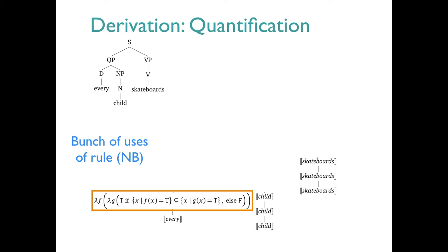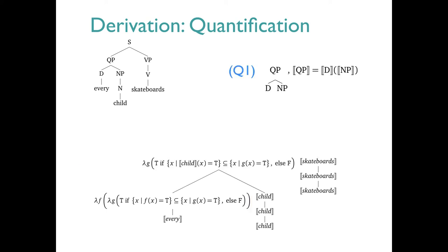We first put together the determiner every with its restriction child. That's an application of Q1. Intuitively, what happens is that the meaning of child knocks out the lambda F in every, and goes in for F in the body of that expression, which delivers the entire meaning of the subject every child.